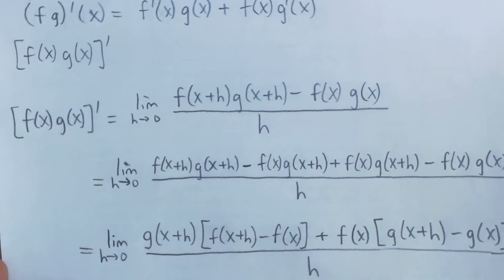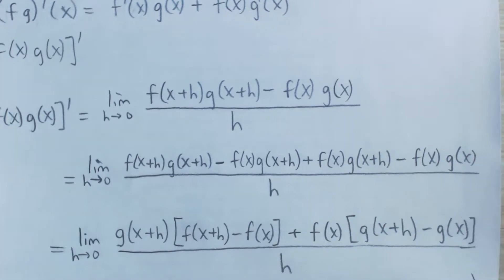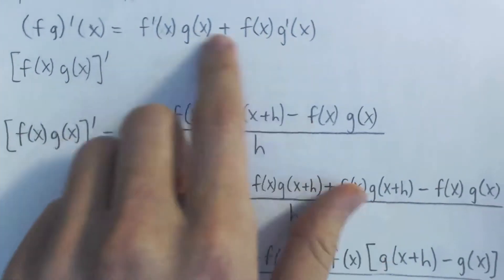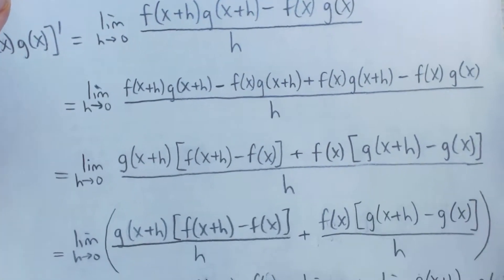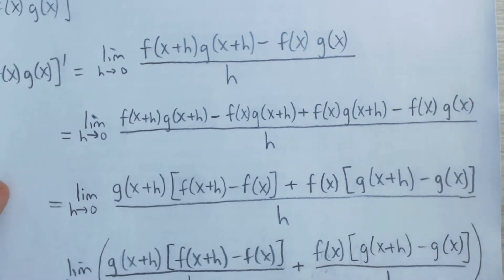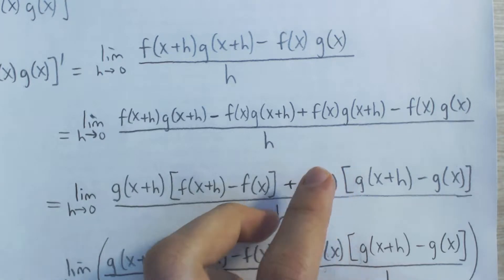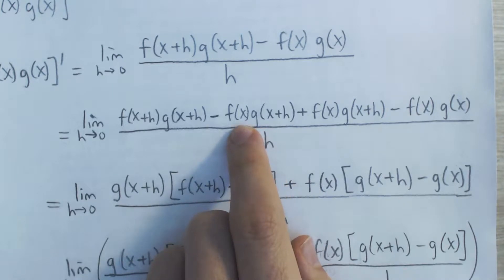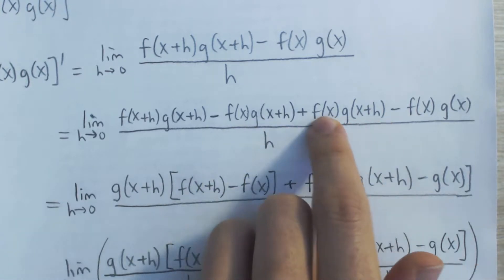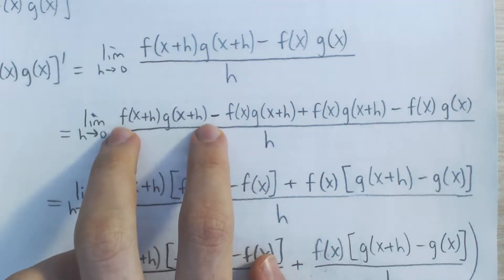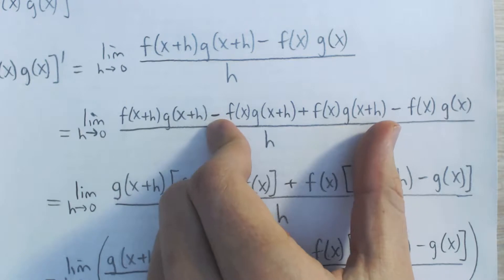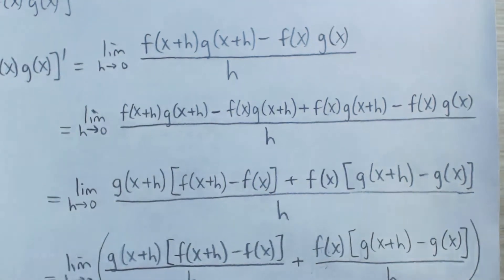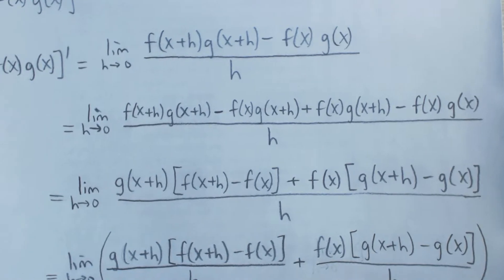Now, we can't just plug in h equals 0 here, because you're going to get 0 over 0. We're going to have to do some algebraic manipulation. One way is we can add and subtract the same thing. This isn't completely obvious — if you hadn't known this proof, it would probably take some guessing and testing. But we're going to add and subtract f of x times g of x plus h. I've added it here and subtracted it here, so I haven't changed the original expression, but this is going to allow us to do some factoring using limit rules.